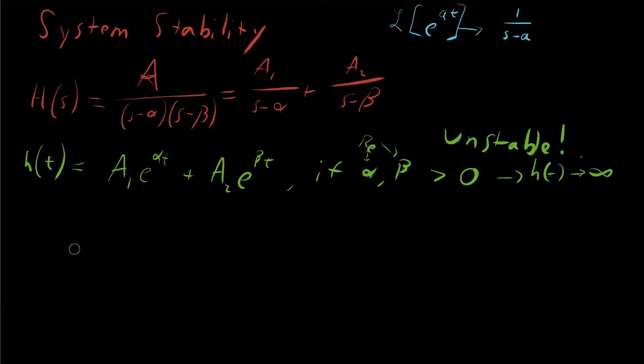And so then to maintain stability, to have a stable system, alpha and beta, the real parts of them, must be less than zero.